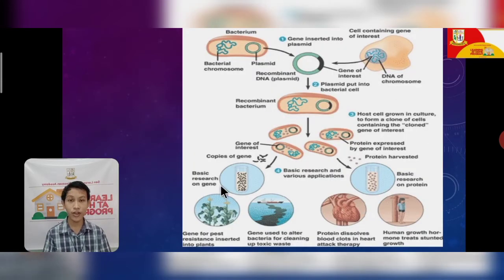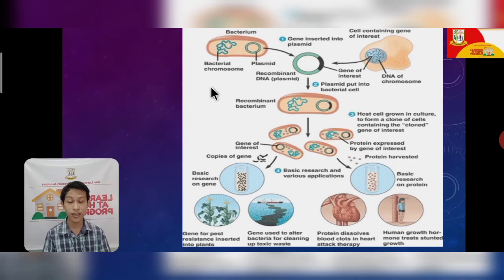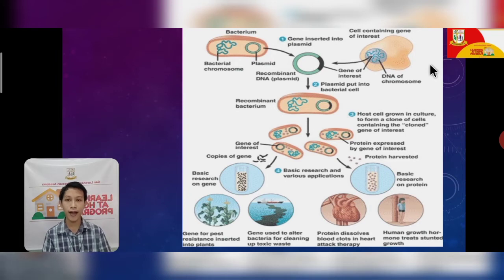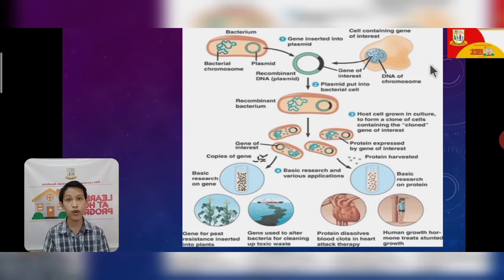So how do they perform that process? In this diagram, it shows how genetic engineering happens — this is one step or one method of genetic engineering. They take what is called a plasmid from a bacteria, and then they take the gene of interest from the organism. For example, if they want to make a plant grow larger, they take the gene from a tall plant like coconut and apply it to small shrub plants.